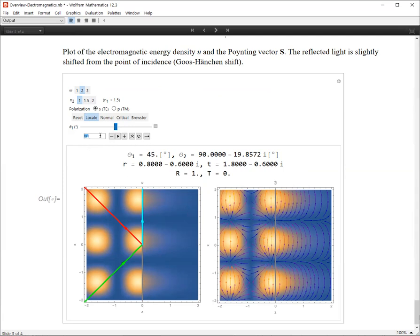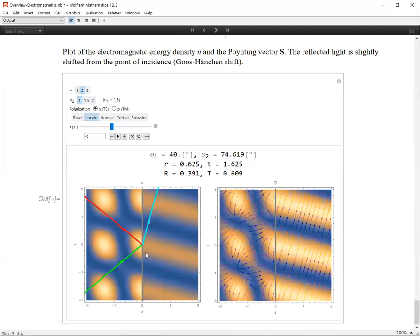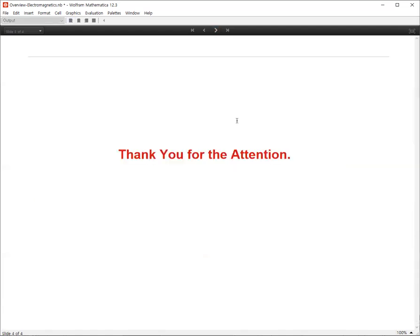Okay. And when theta one is smaller than the critical angle, for example, say 40 degrees, then you can see we have a transmission. So this is the incident wave, and this is the reflected wave, and this is the transmitted wave.